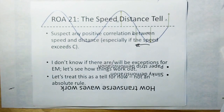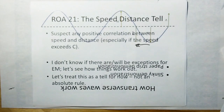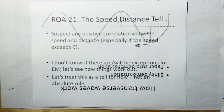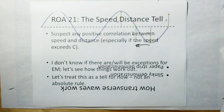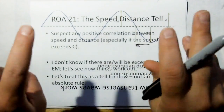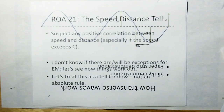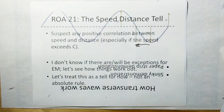So the 21st Rule of Acquisition is the speed-distance tell: suspect any positive correlation between speed and distance, especially if the speed can exceed the speed of light. I don't know if there will be exceptions for ethereal mechanics — let's see how things work out. For now we're just going to treat this as a tell. In the rules of acquisition, a tell is something that isn't necessarily 100% accurate all the time. It's one of those things where it's a hint that you should look deeper at this and make sure it makes sense. That's what a tell is — it's not a rule, it's a tell.